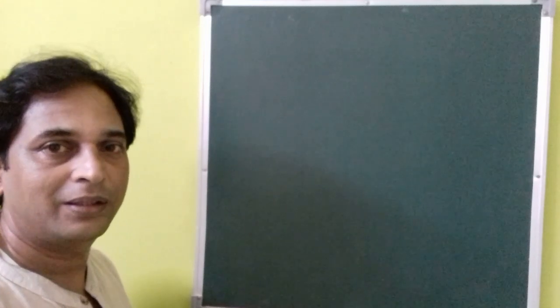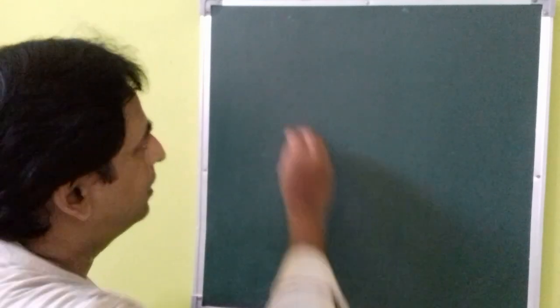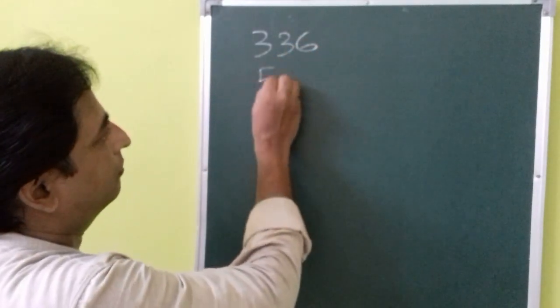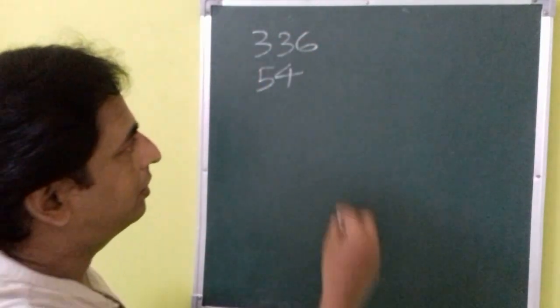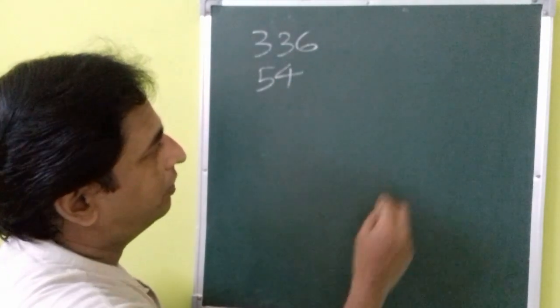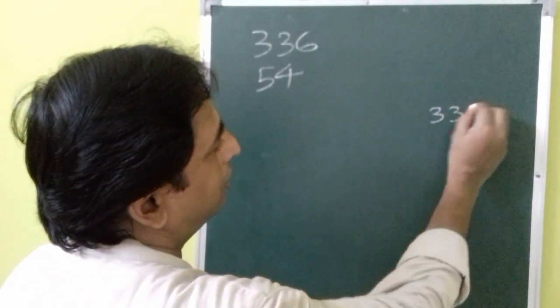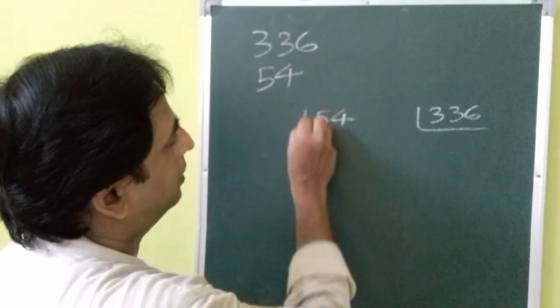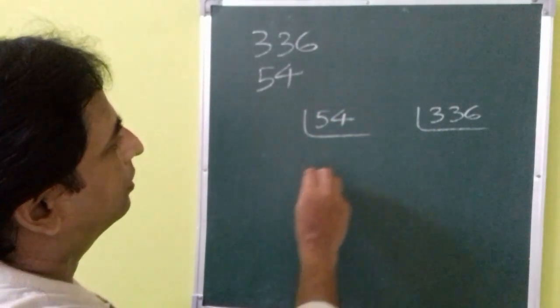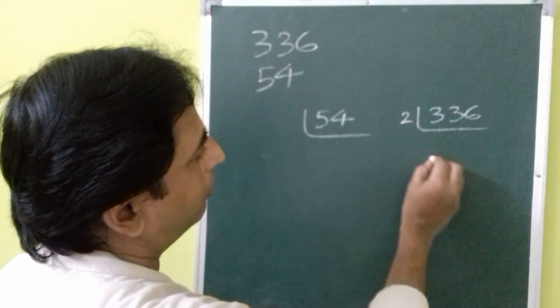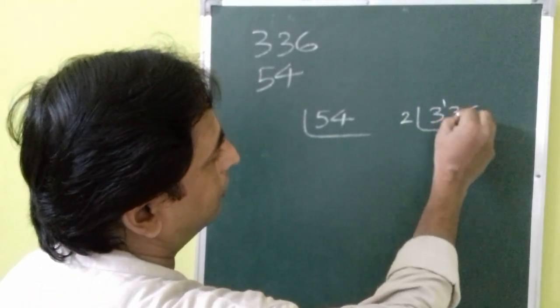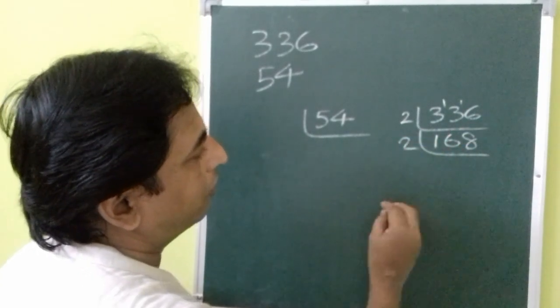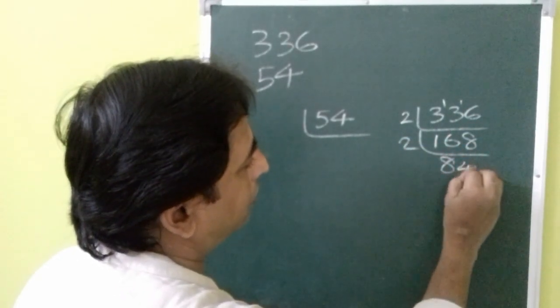Moving on to the next pair of numbers. It is 336 and 54. You need to find the factors of it. You can do the factorization of 336 and 54. So 336 you can divide it by 2. You will get 168. You can do the factorization of this number 84, you will get 42, 21, 3, 7, 1.